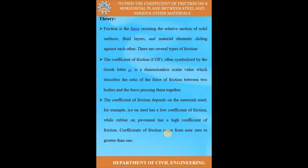The ratio of these forces is called the coefficient of friction. It depends upon the material used — for example, ice on steel has a low coefficient of friction while rubber on pavement has a high coefficient of friction. Car tires are made of rubber while roads are pavement, so there is great friction. If the road is wet or rainy, friction becomes less and you must be careful while driving. Coefficient of friction ranges from near zero to greater than one.